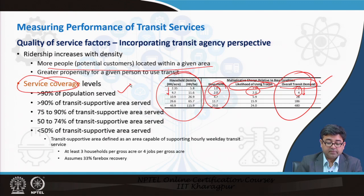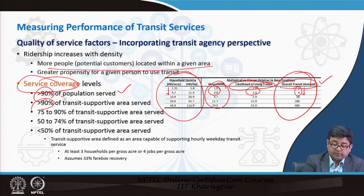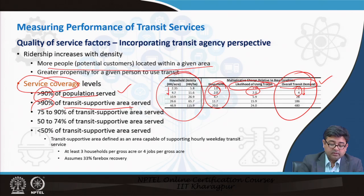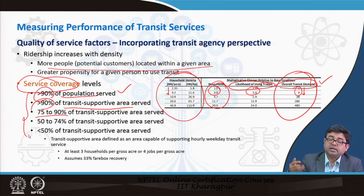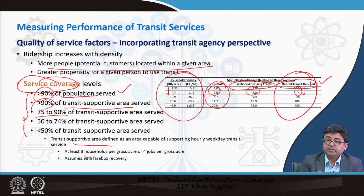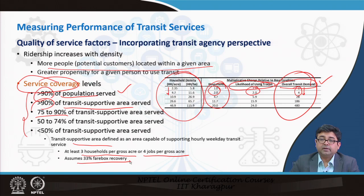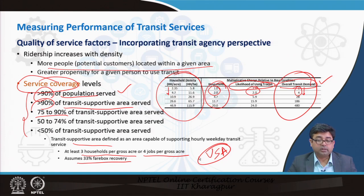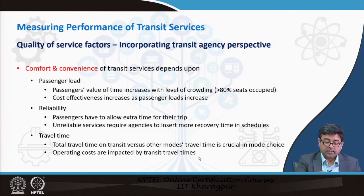It is also shown that service could provide coverage up to 90 percent of the transit supportive area — meaning the area around metro stations or bus nodes — or 75 percent, with different levels depending on what the transit agencies can support based on their budget. The definition of transit supportive area is based on at least 3 households per gross acre or at least 4 jobs per gross acre being available, and also 33 percent of the fare box collection being recovered. These are assumptions made per US conditions that could be altered for other situations.